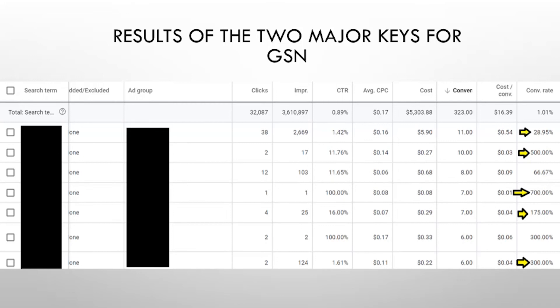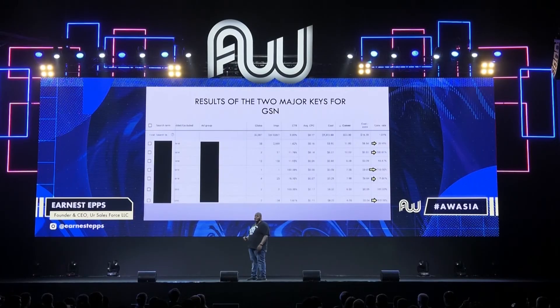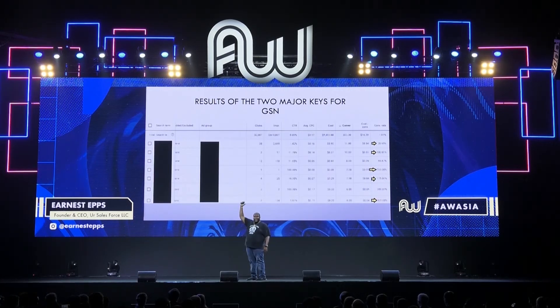Here are the results of managing that entire process. We're seeing a 28% conversion rate, 500% to 700% ROAS, and these are on brand new campaigns that just launched. We just got through the busiest part of the year — Black Friday, Cyber Monday — and everybody else's CPA is going up while my CPA is going down. That's how I want you guys to be doing as you start to launch campaigns on the Shopping Network.